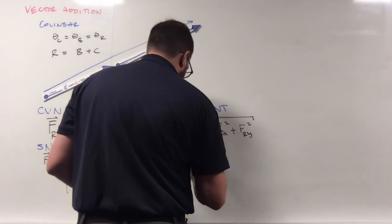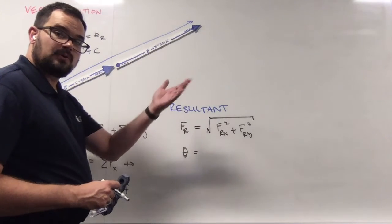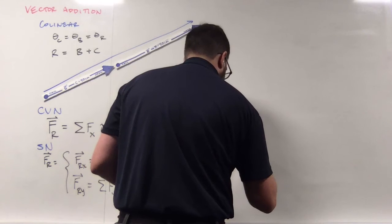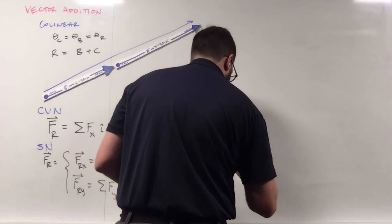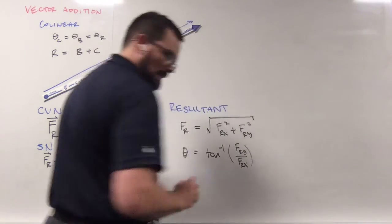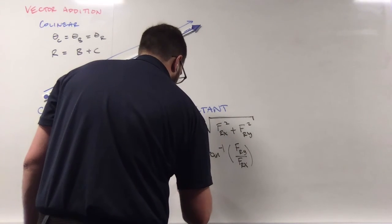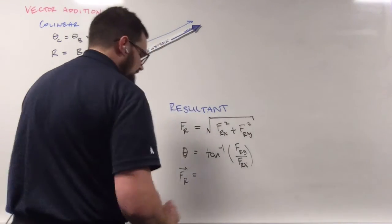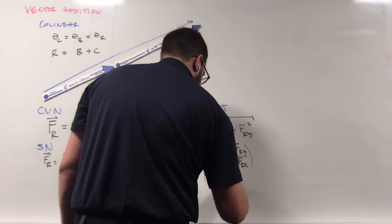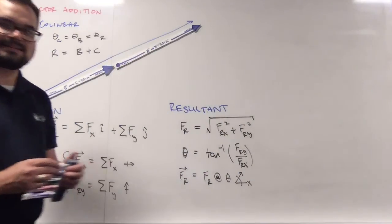And that the angle theta, we can, now that we know the x and y components, we can actually use an inverse tangent, opposite over adjacent. And that would be theta from the x-axis, such that our resultant force vector is going to have the resultant magnitude at the angle theta up from the horizontal x-axis.